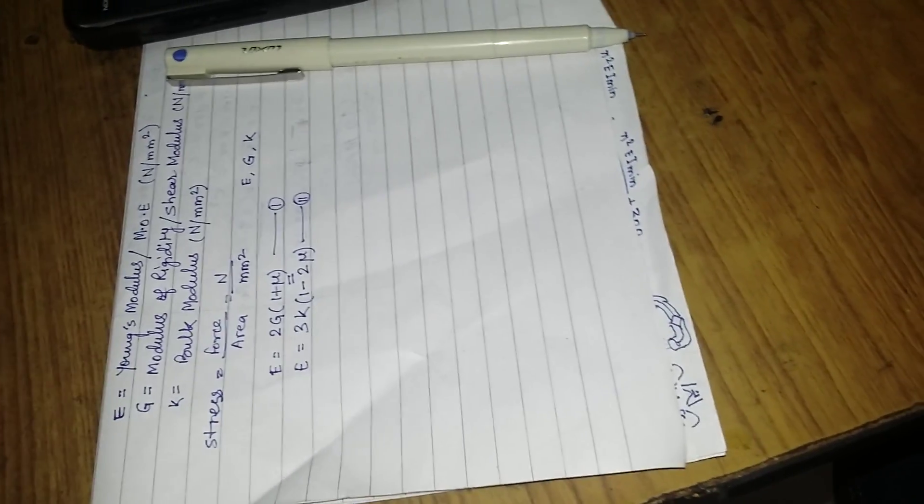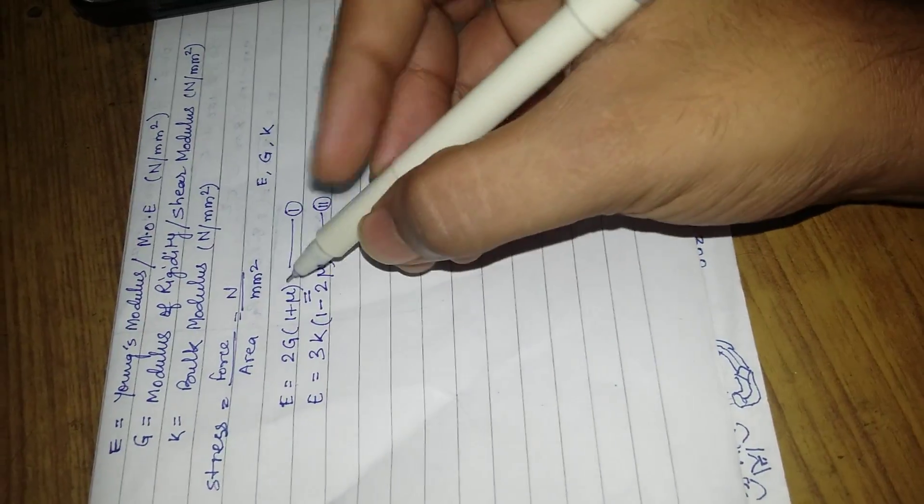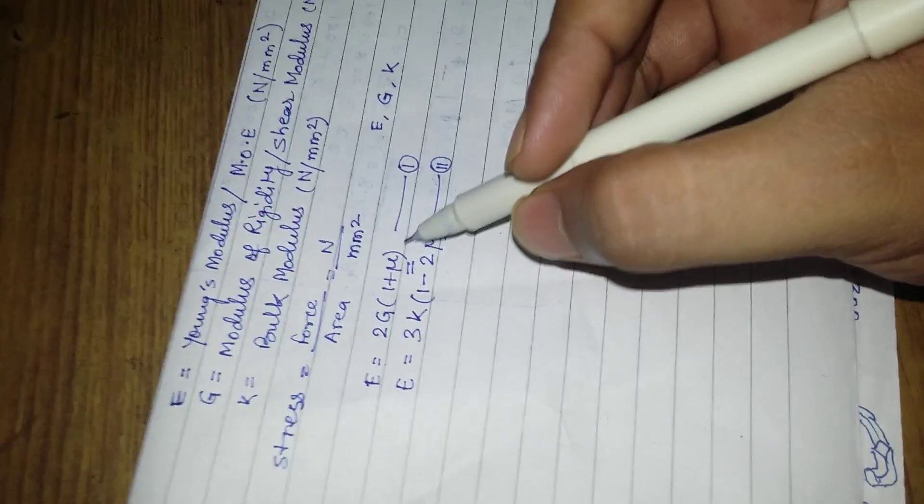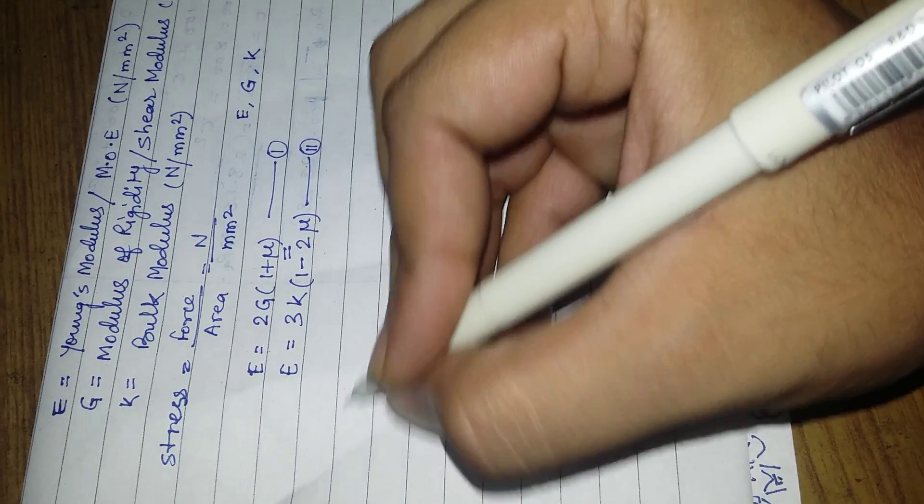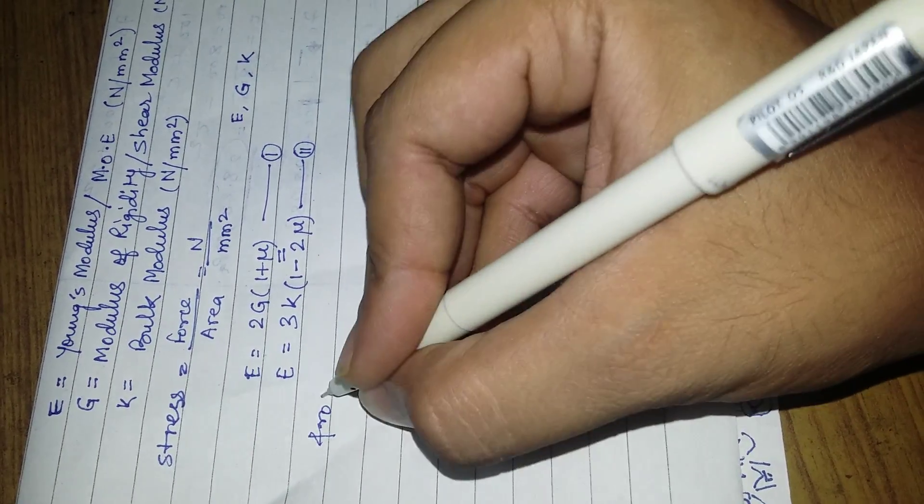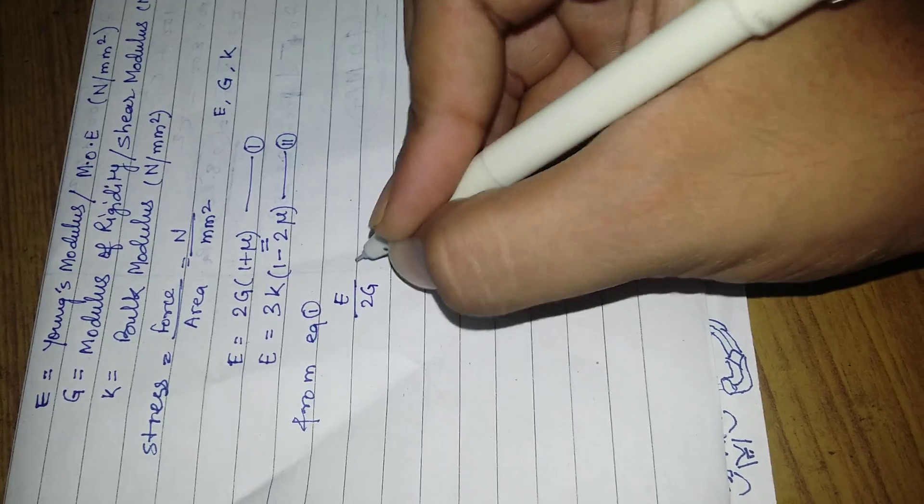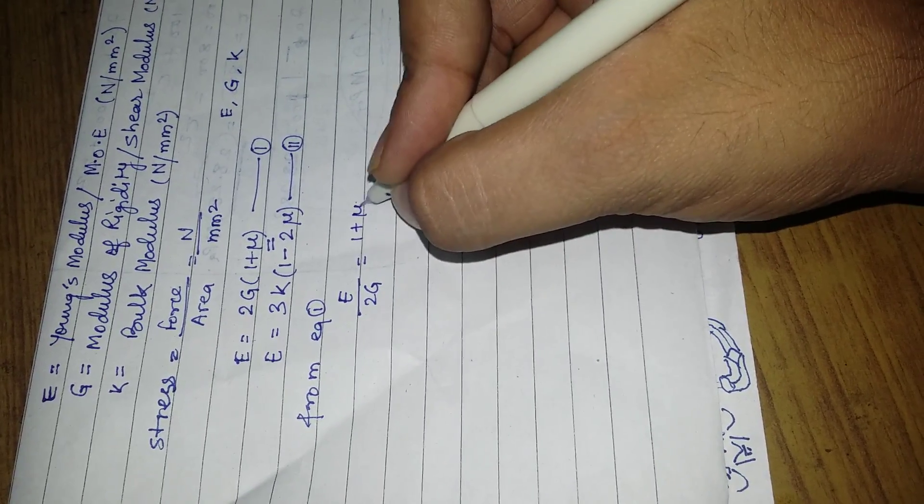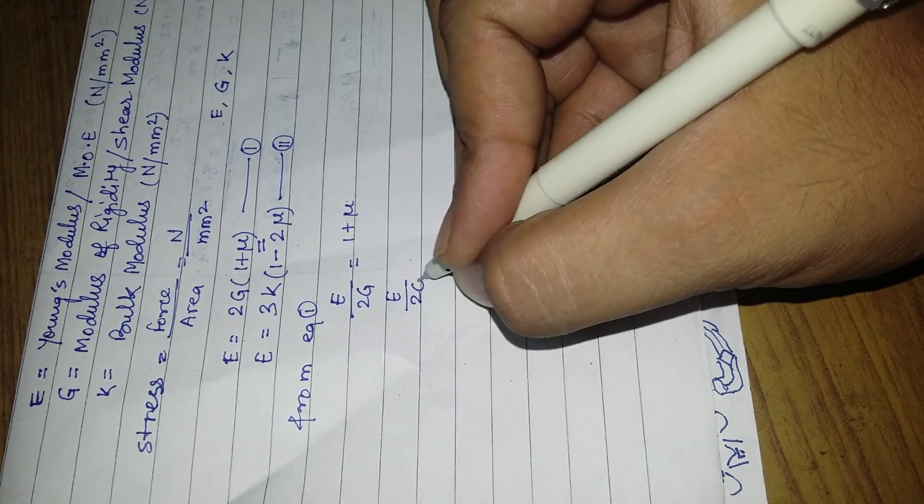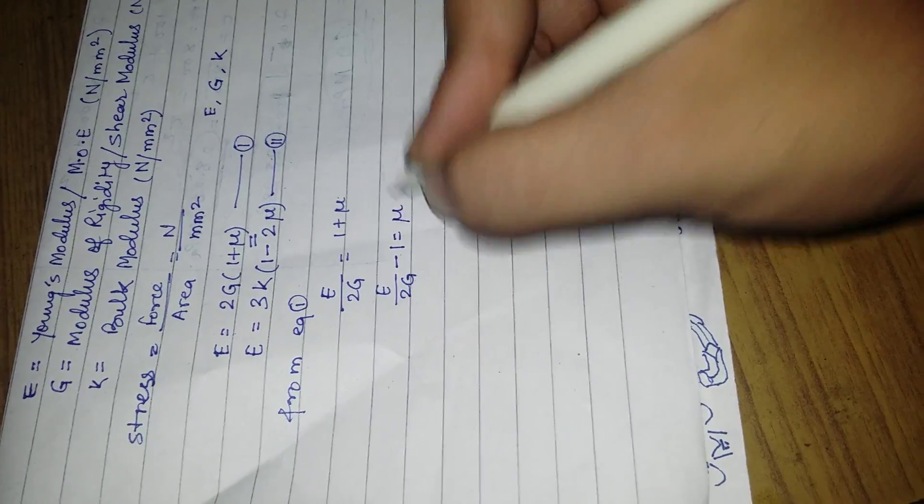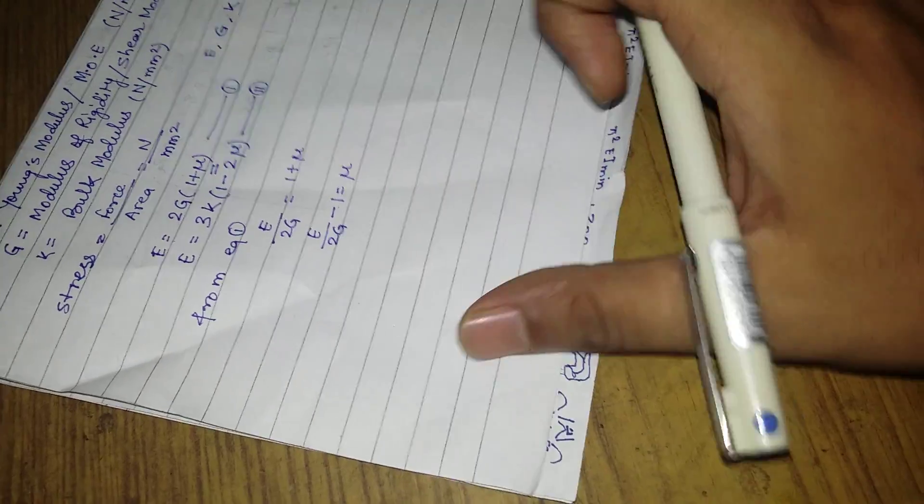Now what I would like to do is get the value of μ from the first equation and put it in equation number 2. From equation number 1, we get E upon 2G equals 1 plus μ, and then E upon 2G minus 1 equals μ.